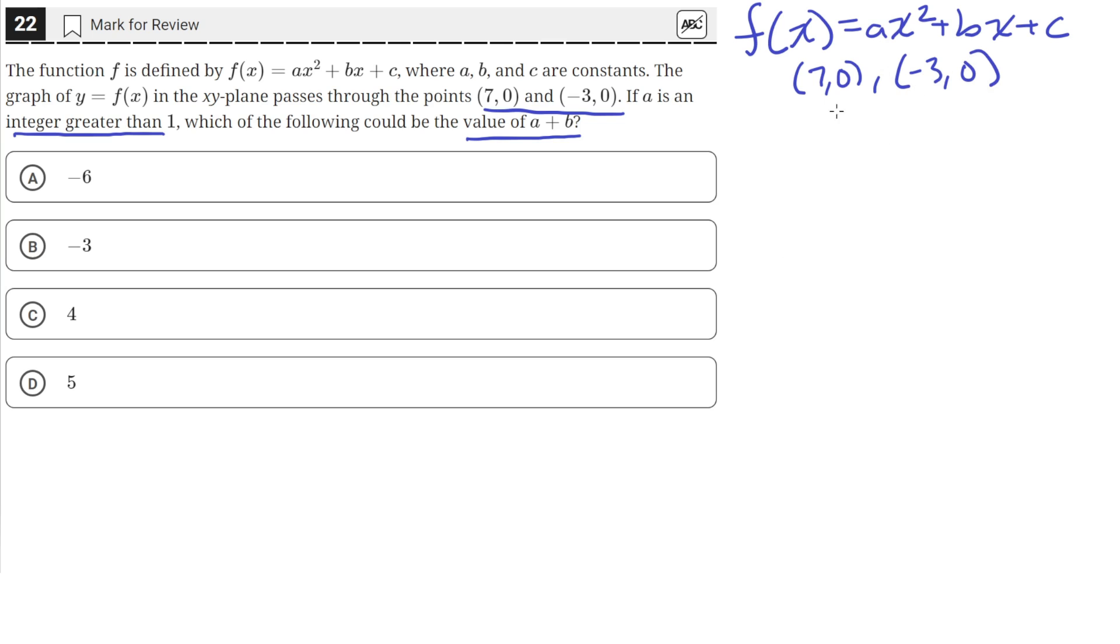Just by looking at these two points, we can recognize that these are roots of the quadratic, because they both have y values of 0. The graph passes through the x-axis through these two points, which means we can rewrite the standard form using the roots form. So we can rewrite f(x) as a(x - 7)(x + 3).